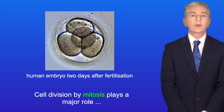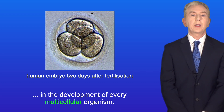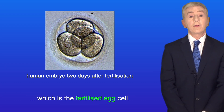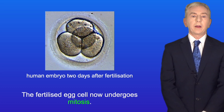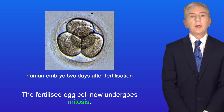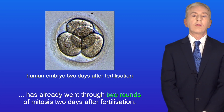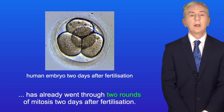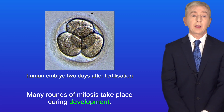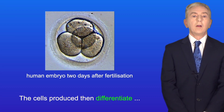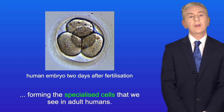Cell division by mitosis plays a major role in the development of every multicellular organism. All humans start as a single cell — a fertilised egg cell — which then undergoes mitosis. For example, this four-cell human embryo has already run through two rounds of mitosis two days after fertilisation. Many rounds of mitosis take place during development, and the cells produced then differentiate, forming the specialised cells seen in adult humans.